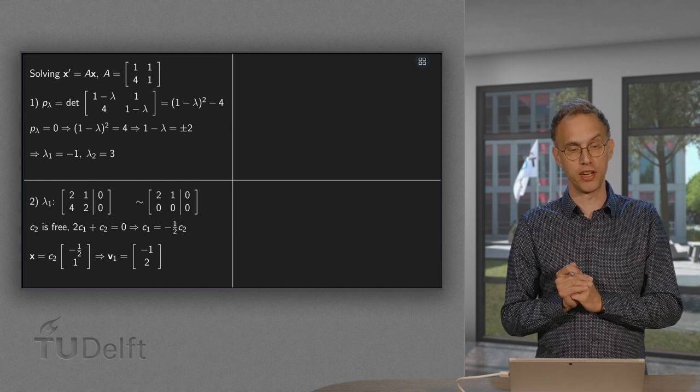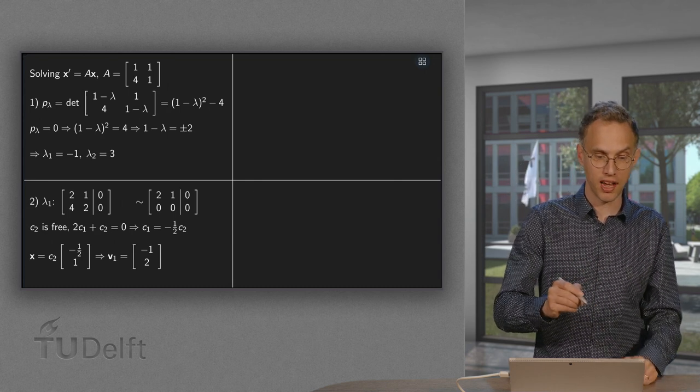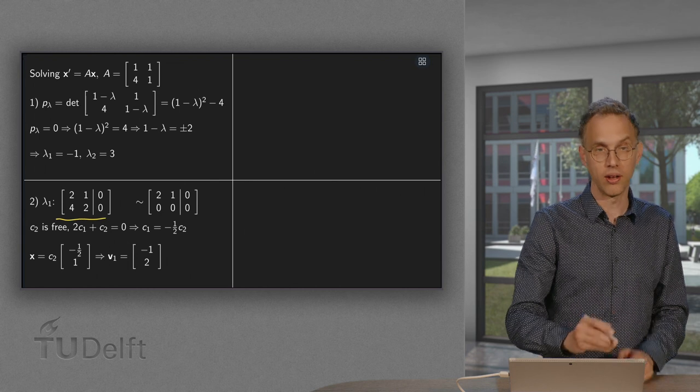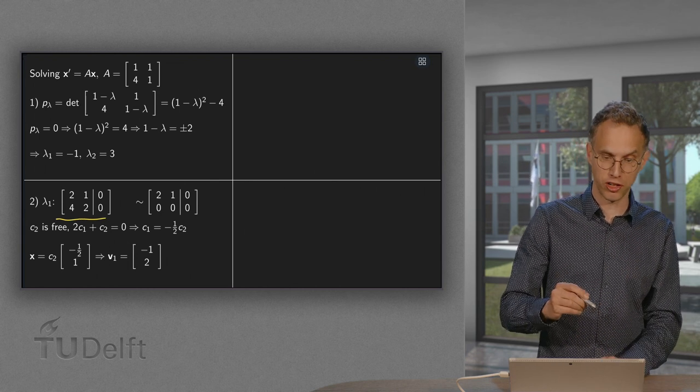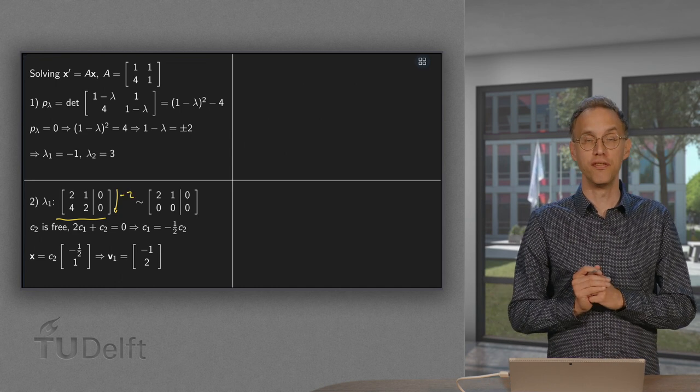So let us start with λ₁ equals -1. We compute A minus λ₁ times I. So here it is. You add zeros and you do row reduction. So we do minus 2 here. And we get a free variable.